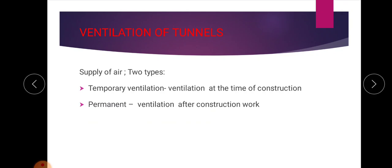The supply and purification of air is done in two ways. Temporary ventilation is the ventilation provided during construction time in order to give fresh air for the workers. Permanent ventilation is provided after the construction work is completed and is a permanent arrangement for that tunnel.